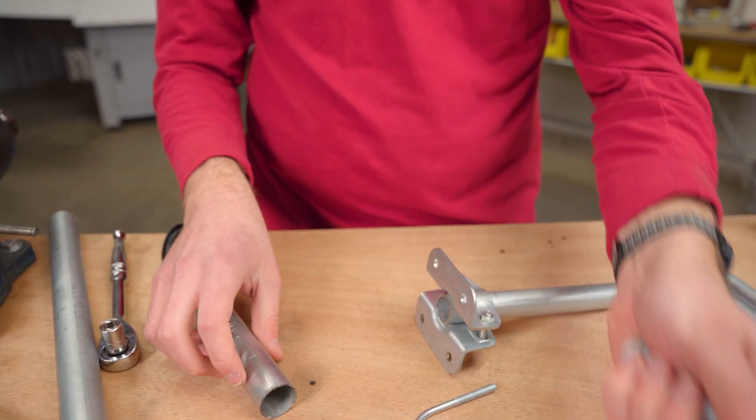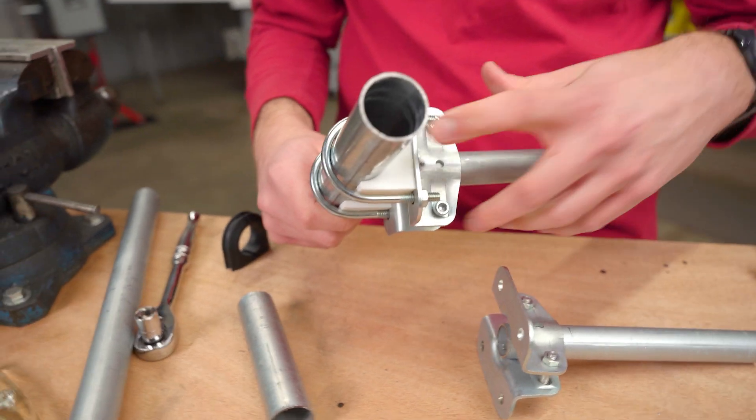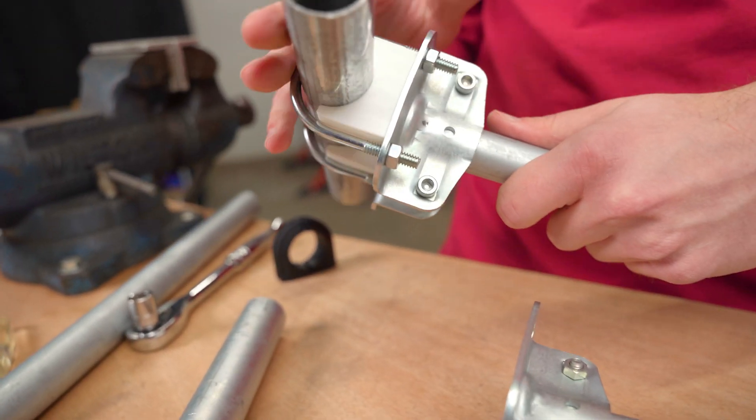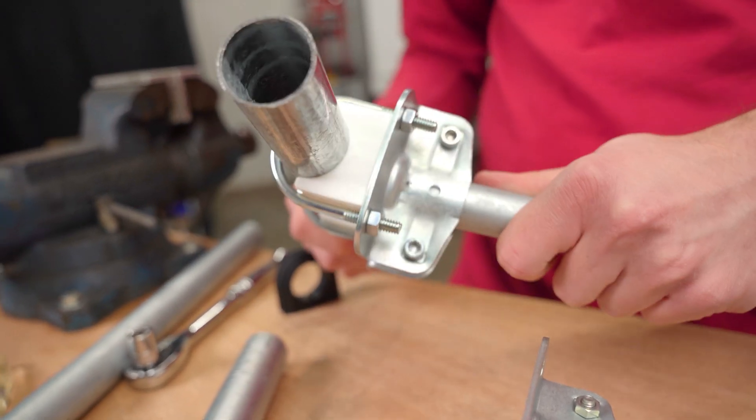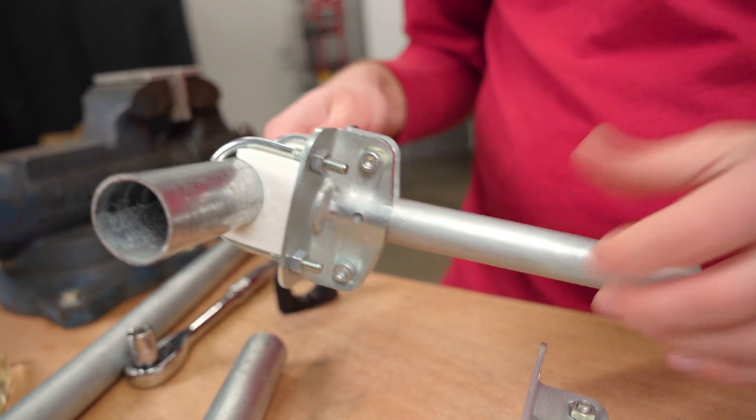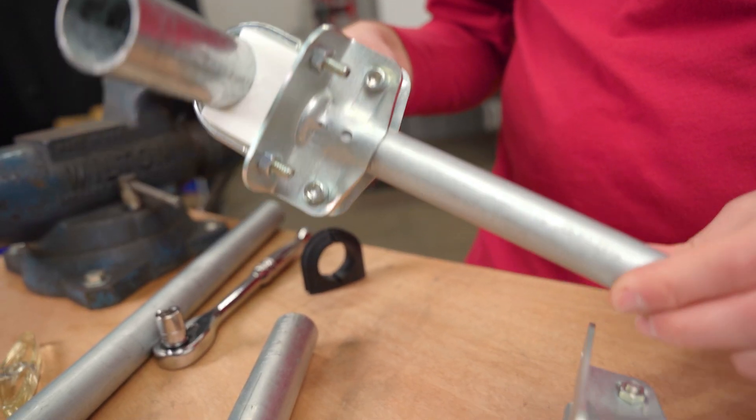Which led us to 3D print these custom blocks here. This is one and three-eighths inch top rail, which we currently have a T connector for, and this is top rail adapted to three-quarter inch EMT.